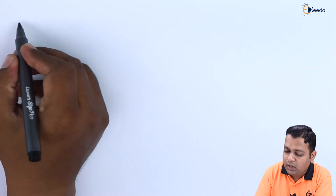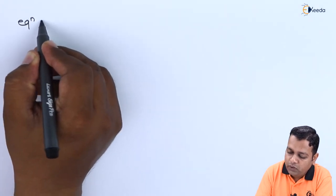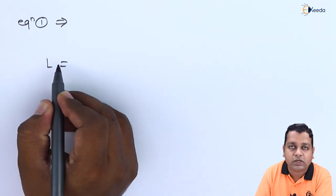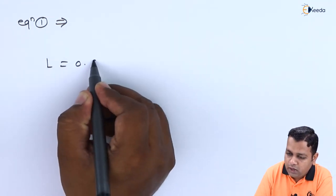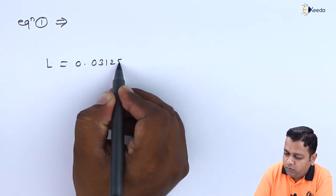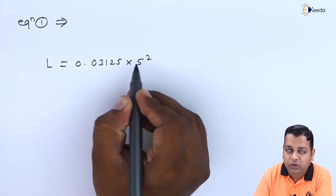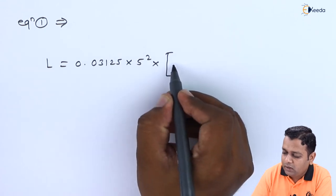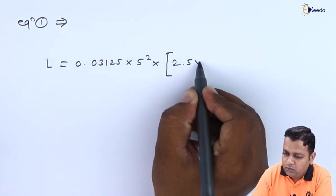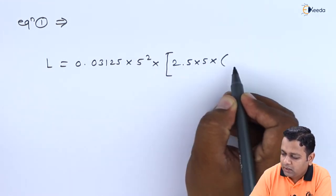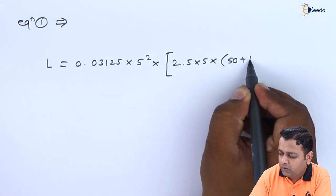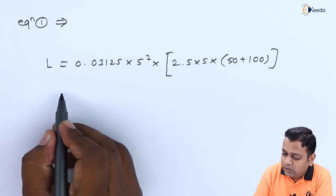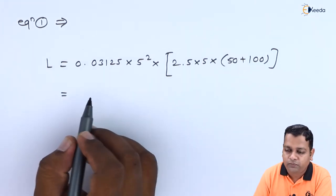We can write equation number 1 as: L = 0.03125 × n² × [2.5 × n × (50 + 100)]. So this calculation results to the value 1464.84 × 10⁻⁹ henrys per mil.